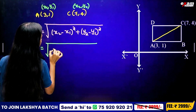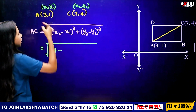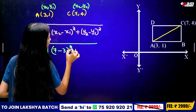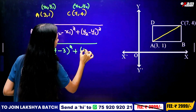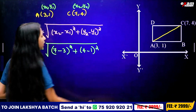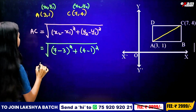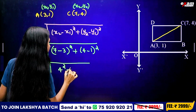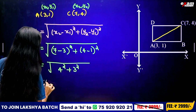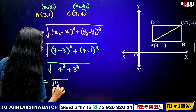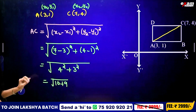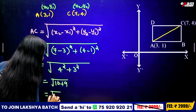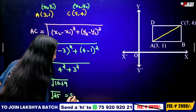Substituting the values: 7 minus 3 is 4 squared, plus 4 minus 1 is 3 squared, which equals the square root of 16 plus 9, which is the square root of 25, which equals 5.